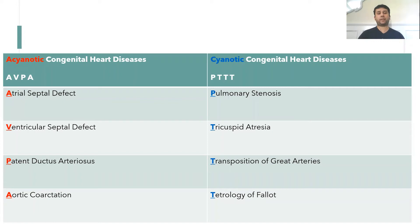For cyanotic heart diseases, use the mnemonic PT3: pulmonary stenosis, tricuspid atresia, transposition of great arteries, and tetralogy of Fallot. So acyanotic is ASD, VSD, PDA, and aortic coarctation, and cyanotic is PT3.